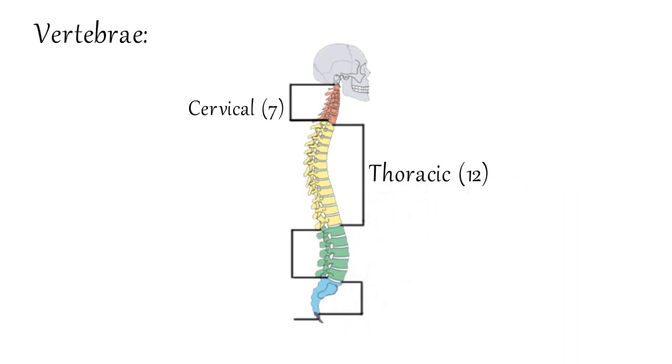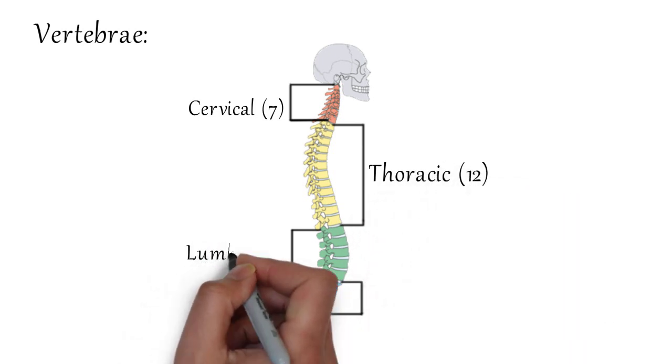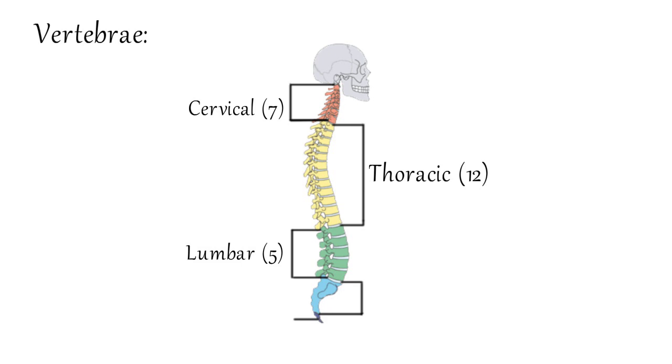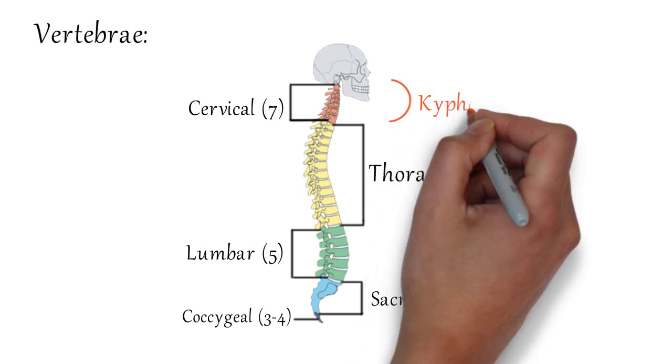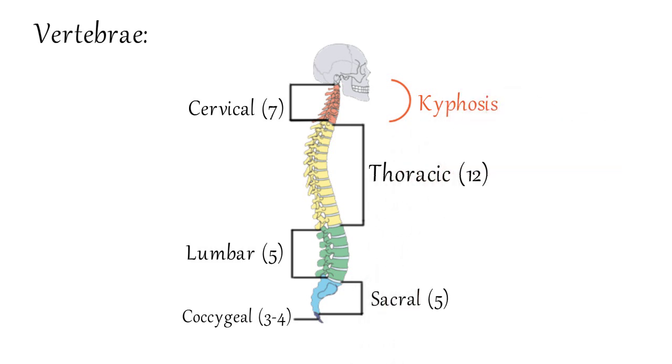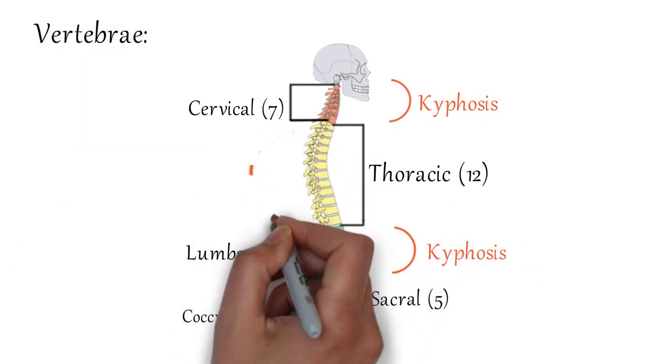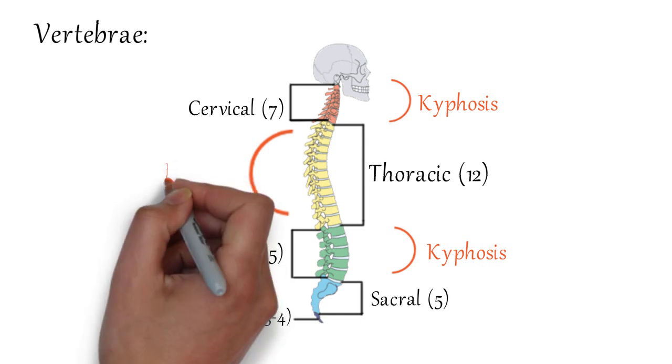7 cervical, 12 thoracic, 5 lumbar, 5 sacral, 3 to 4 coccygeal. The size of vertebral body increases from cervical to lumbar. This is kyphosis, the outer curvature. This is lordosis, the inner curvature.